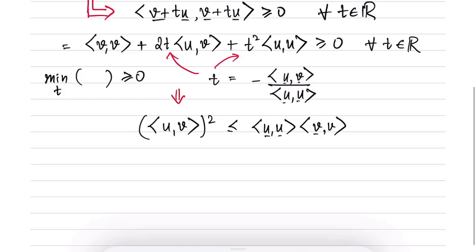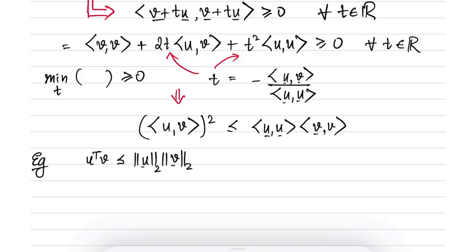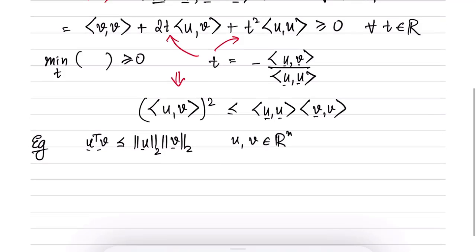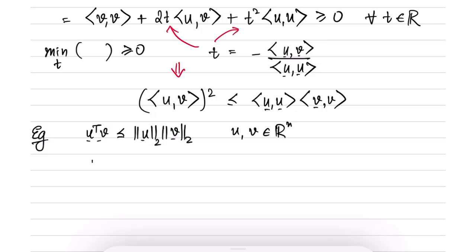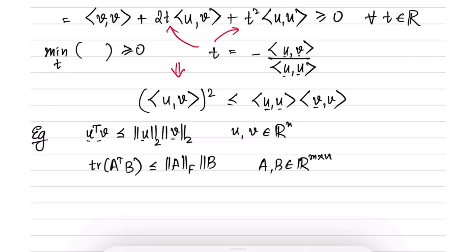Let us look at some examples. The two most common examples we have already seen: first, u transpose v is less than or equal to the L2 norm of u times the L2 norm of v, where u and v are in R^n. Second, for matrices A and B of size m by n, the trace of A transpose B is less than or equal to the Frobenius norm of A times the Frobenius norm of B.